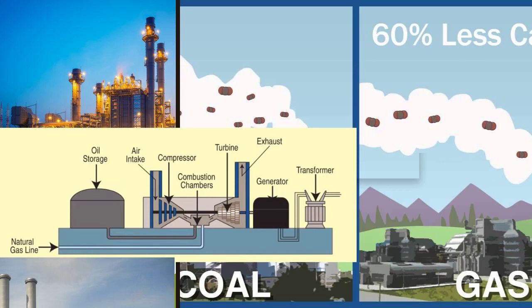Gas power plants primarily use natural gas, a fossil fuel composed mainly of methane, as their fuel source. Natural gas is abundant and is often considered a cleaner alternative to coal and oil due to its lower carbon emissions when burned.